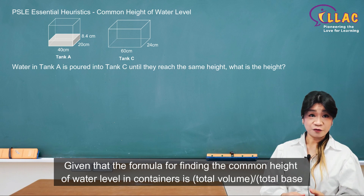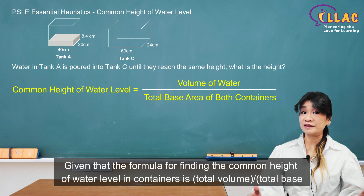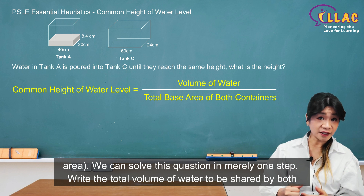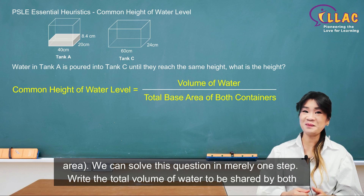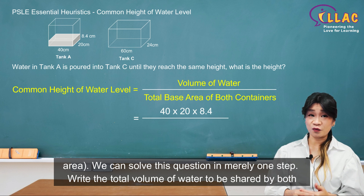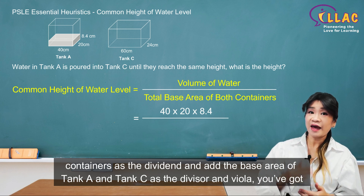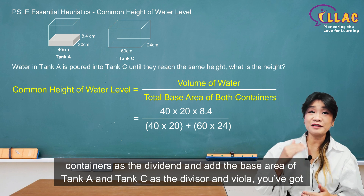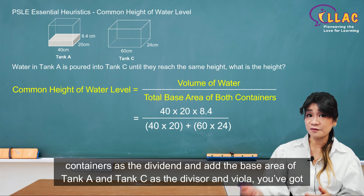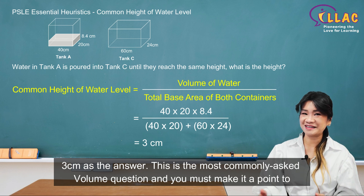Given that the formula for finding the common height of water level in containers is total volume over total base area, we can solve this question in merely one step. Write the total volume of water to be shared by both containers as the dividend, and the base area of tank A and tank C as the divisor, and you've got 3cm as the answer.